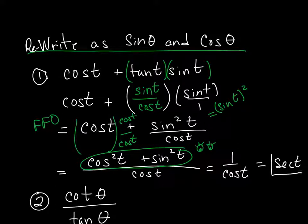The cosine squared plus the sine squared is just equal to 1, so I have 1 over the cosine of t, which equals the secant. That's how I reduced the original question into one trig term.